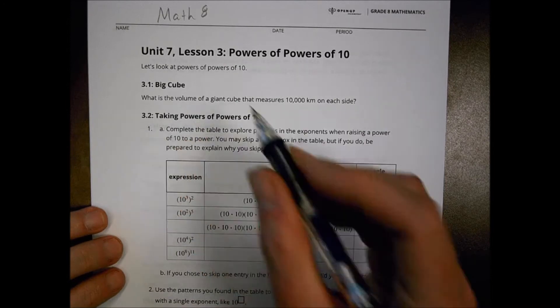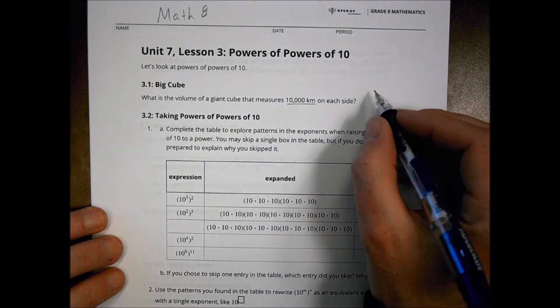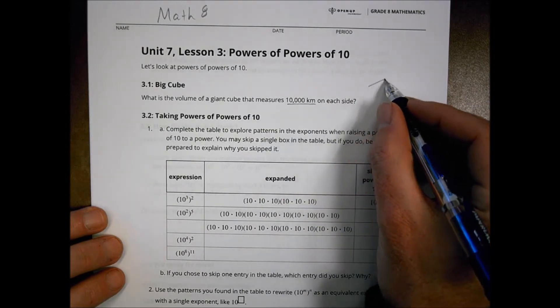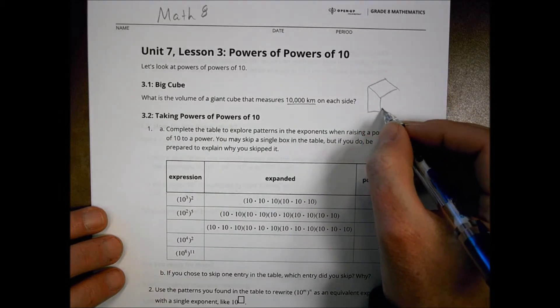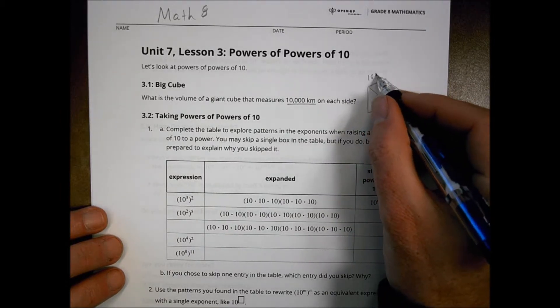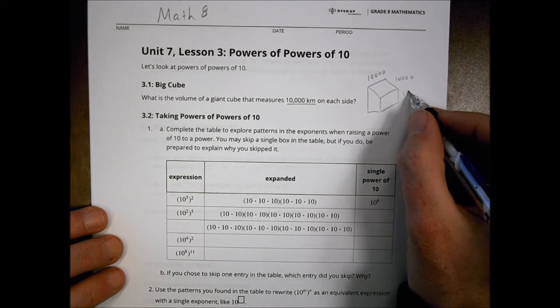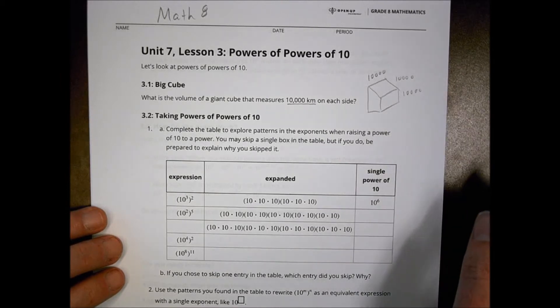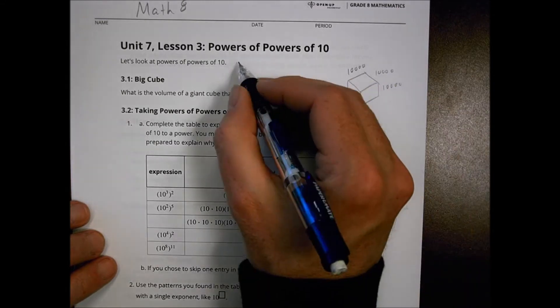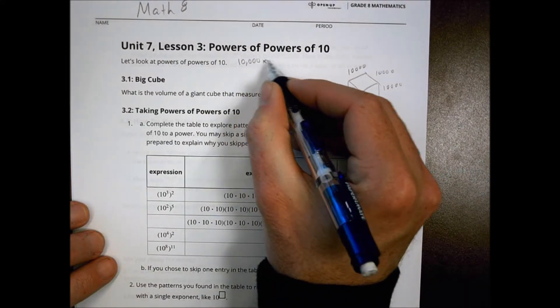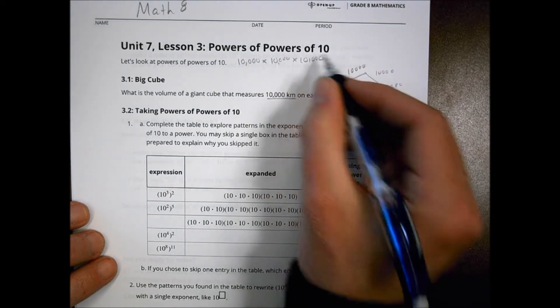First of all, it starts off with what is the volume of a giant cube that measures 10,000 km on each side. Let's take a look here. If I had a cube with a 10,000 km side here, a 10,000 km side there, and the height was also 10,000 km, what would the volume be? To find the volume of a shape like this, we're talking about taking each side and multiplying it by each side.